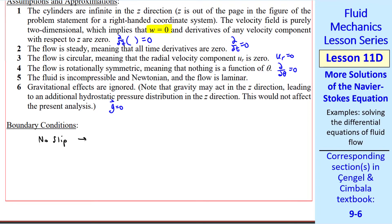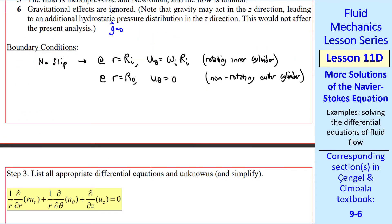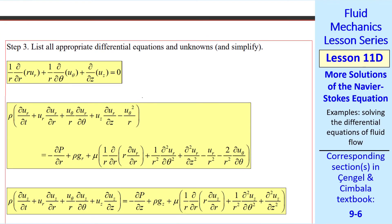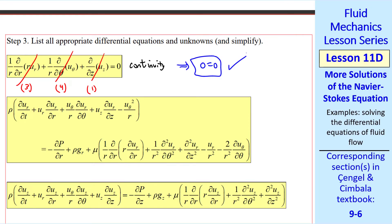The boundary conditions are no-slip at both walls. At the inner wall, u_theta must equal the wall speed omega_i r_i. At the outer wall — which is stationary — u_theta must be zero. Step three: for the continuity equation in r-theta-z coordinates, all terms vanish by assumptions three, four, and one, so continuity is exactly satisfied.